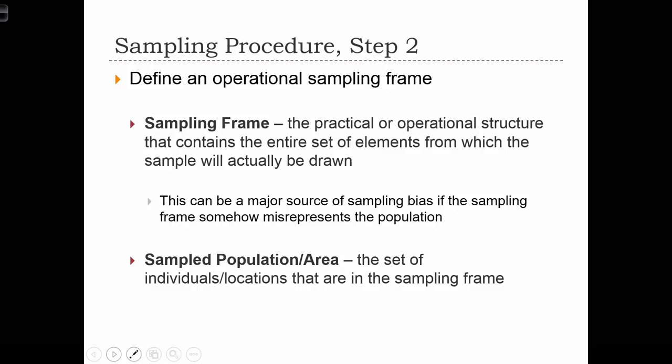The second step is to define an operational sampling frame. The sampling frame is a practical or operational structure that contains the entire set of elements from which the sample will be actually drawn. For example, if we were trying to draw a sample from the residents of Salt Lake City, we could go to City Hall and ask for a roster of all registered residents. This can sometimes be a major source of sampling bias — if we rely on a sampling frame that registers only those residents with actual addresses, we're going to miss the homeless population, who are inhabitants of the city but aren't appearing on the sampling frame.